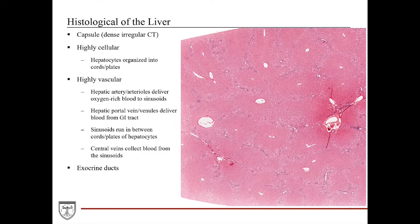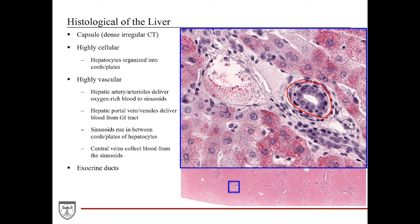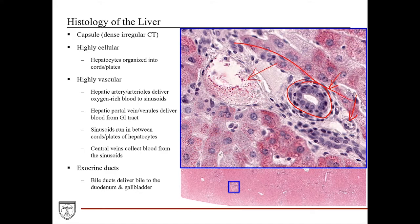The liver is an exocrine gland, so we should expect to see ducts. The bile duct is comprised of simple cuboidal epithelium. These bile ducts coalesce as they emerge from the liver to deliver bile into the duodenum or store it in the gallbladder. The unique histological relationship between the bile duct, hepatic arteriole, and hepatic portal vein — traveling together — is called the hepatic portal triad, or portal triad. When this triad runs in longitudinal plane, it is called the portal tract.